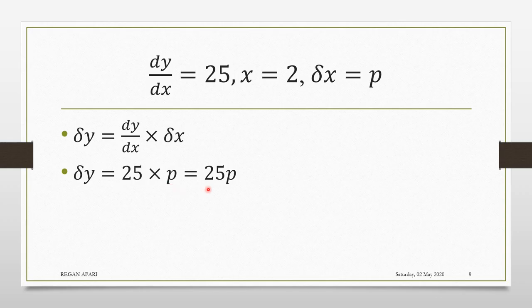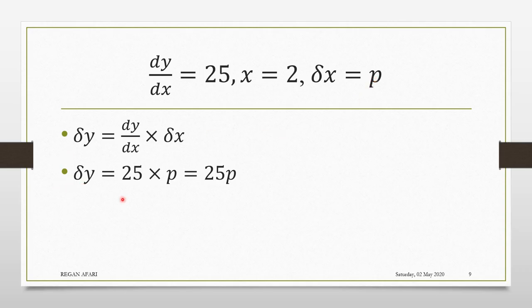Always, when you are given a question, just find your dy/dx and then find delta x, and you'll be good to go. What this means is that when x increases by a small number p, y would also increase by 25p. Y increases because the sign here is positive, so y would also increase.